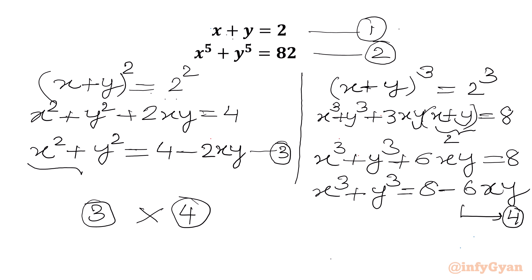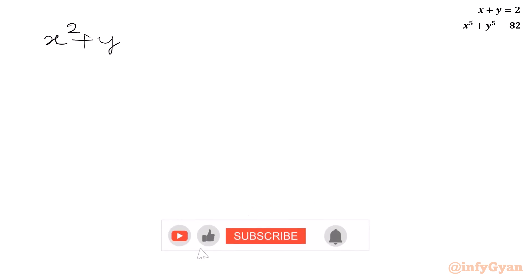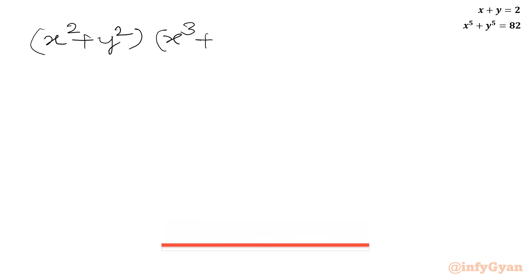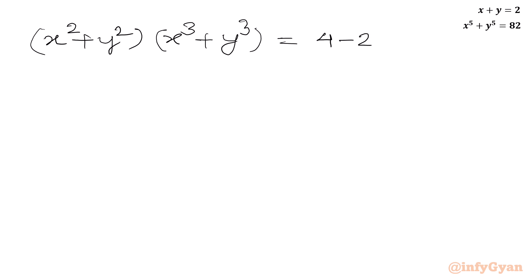So we will multiply LHS with LHS and RHS with RHS. So we get x squared plus y squared times x cubed plus y cubed equal to 4 minus 2xy times 8 minus 6xy.